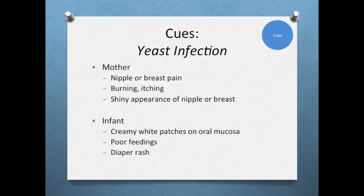Next, in our clinical decision-making framework, we move on to cues. Cues include observations or laboratory and assessment data. With a yeast infection, signs and symptoms in the mother may include nipple or breast pain, burning or itchiness, or a shiny appearance of the nipple or breast. Nipples may also have white dots and appear swollen. The infant may be asymptomatic or they may have creamy white patches on their oral mucosa that does not scrape off. They may experience poor feedings and they also may have a diaper rash. Although there are lab tests to positively identify candida, many doctors will just treat with an antifungal medication if suspected.